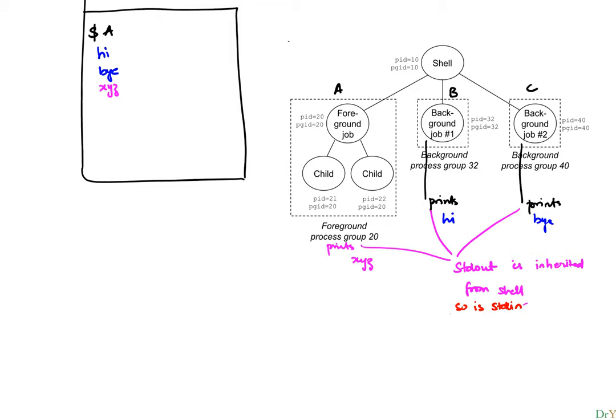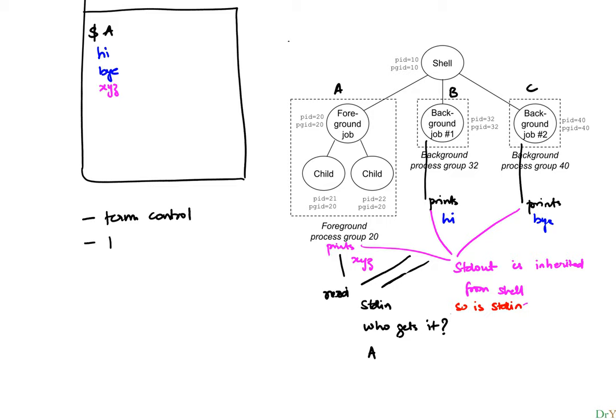If either of them were to do a read, they're all reading from stdin. The question is: who gets it? The answer should obviously be A gets it. But the problem is all of them are sharing the stdin — how do you make sure that only A gets it and not the others? The way it is done is through two notions: one is called terminal control and the other is a process group.